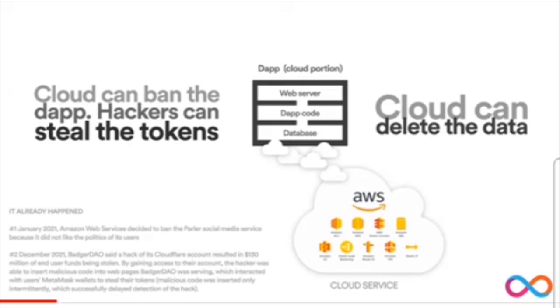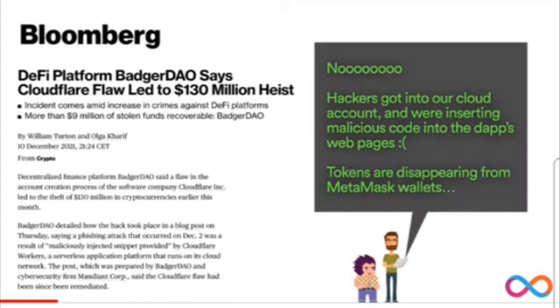Hackers who get into a cloud account can steal tokens, and if something goes wrong the cloud could even just delete the data. Regarding hackers stealing tokens from cloud accounts — that's already happened. A few months ago BadgerDAO lost 130 million dollars because hackers got in. So that is the traditional Amazon system: vulnerable to attacks, token theft, charging crazy amounts of money to store your data, and it's not even safe.